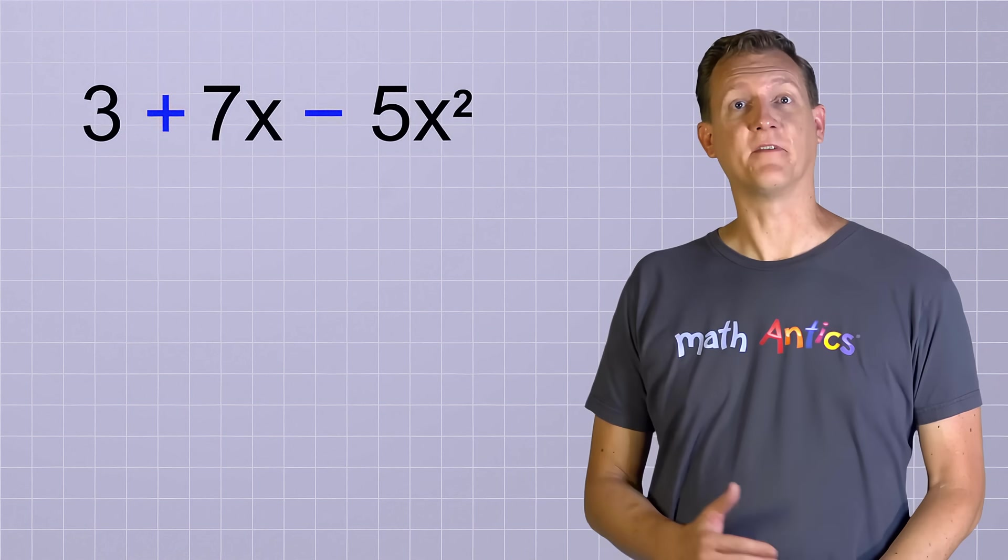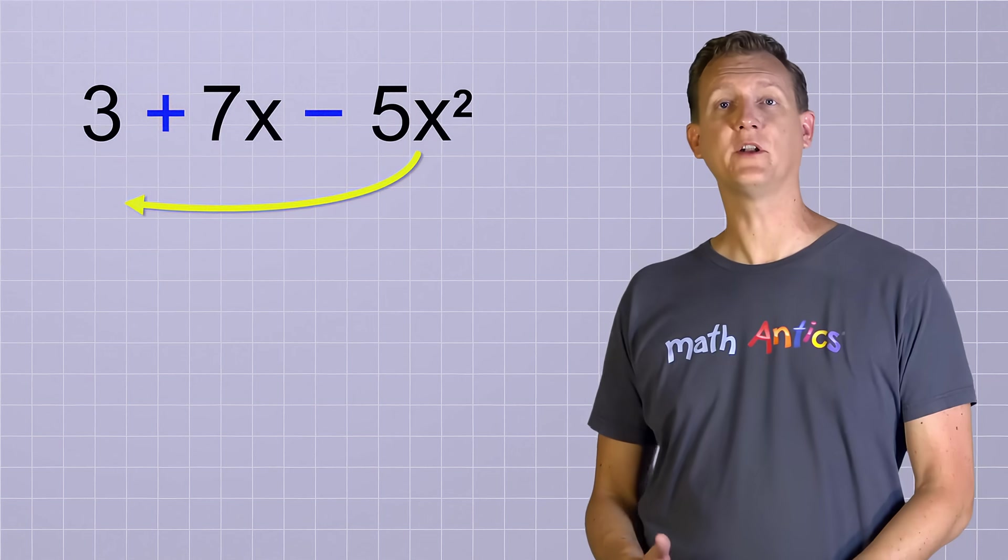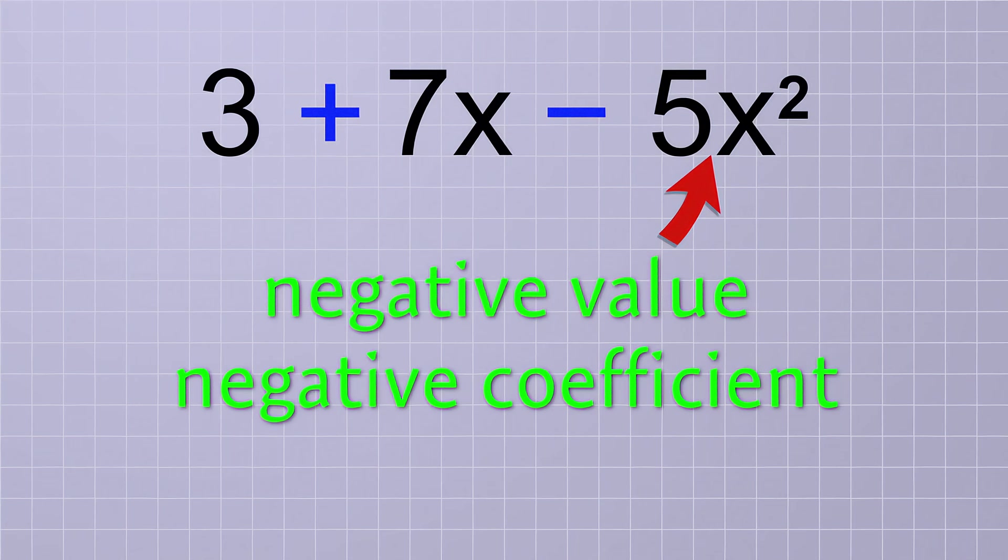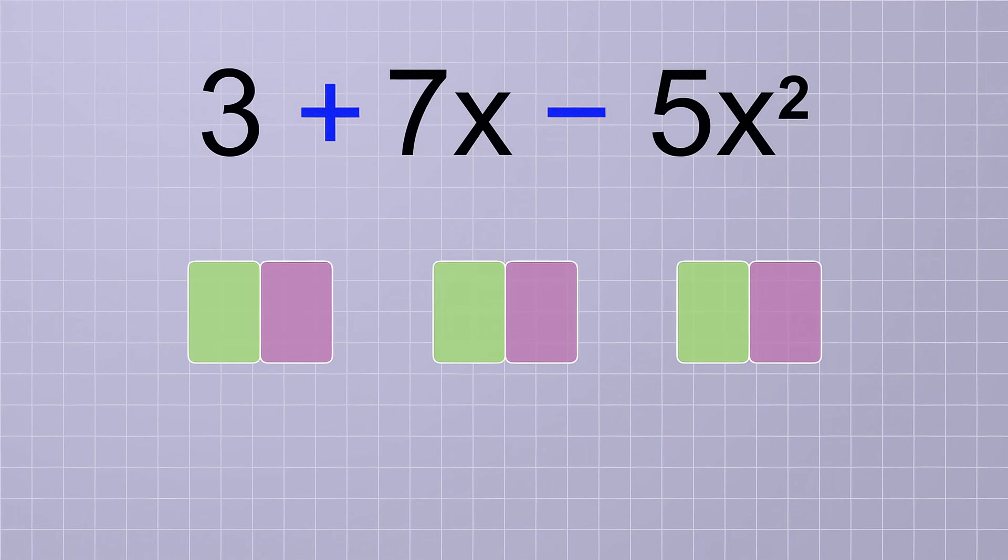The highest degree term is 5x squared. But before we just move it to the front of the polynomial, it's important to notice that it's got a minus sign in front of it. Normally, when we see a minus sign, we think of subtraction. But when it comes to polynomials, it's best to think of a minus sign as a negative sign that means that the term right after it has a negative value, or a negative coefficient. In fact, instead of thinking of a polynomial as having terms that are added or subtracted, it's best to think of all of the terms as being added, but that each term has either a positive or a negative coefficient, which is determined by the operator right in front of that term.